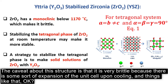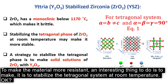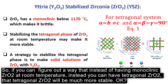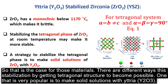The caveat about this structure is that it's very brittle, because there's some expansion of the unit cell upon cooling. So, what to make the material more resistant? An interesting thing to do is to stabilize the tetragonal system at room temperature. If you can have a tetragonal zirconia instead of monoclinic at room temperature, that tetragonal zirconia would be much more stable.